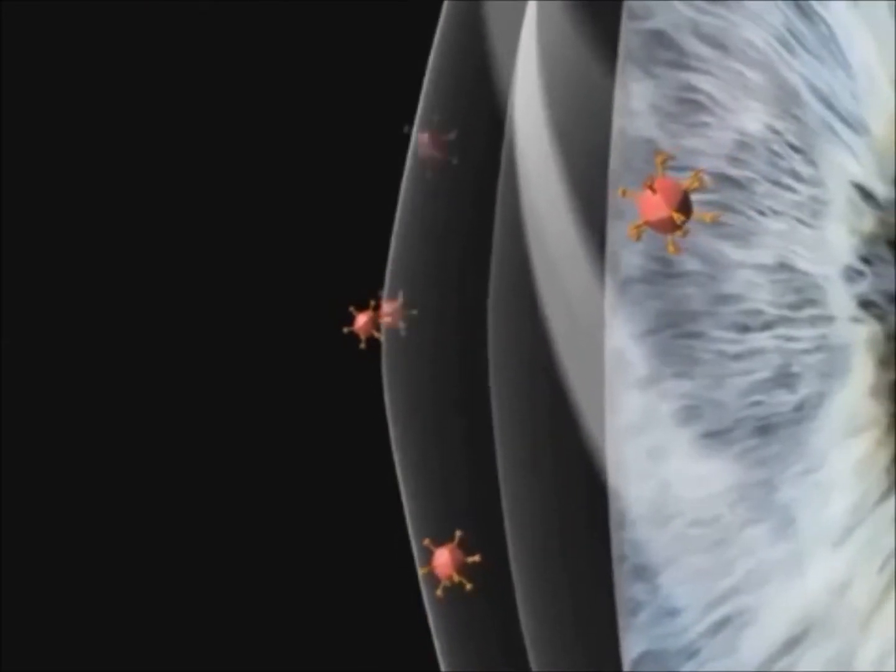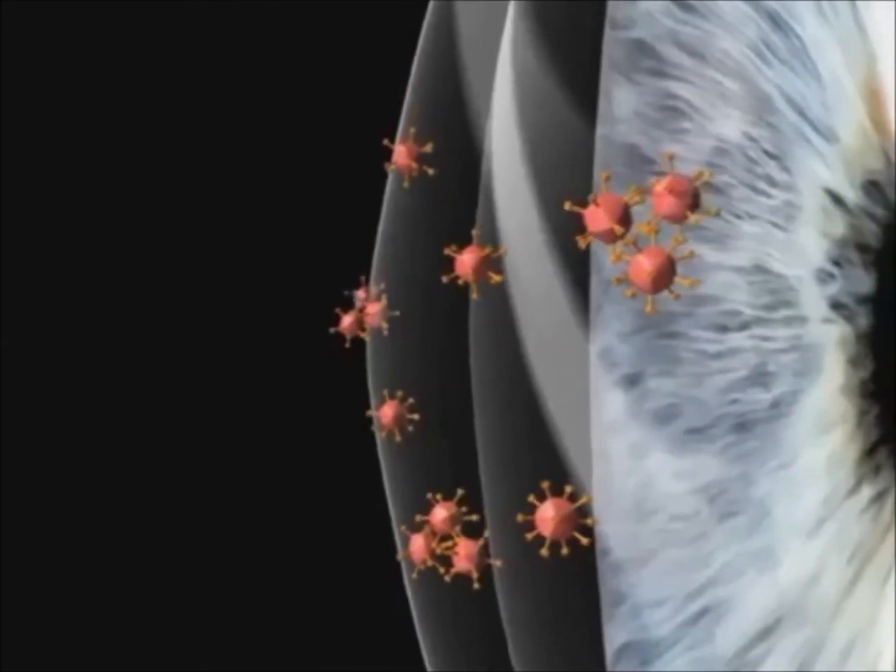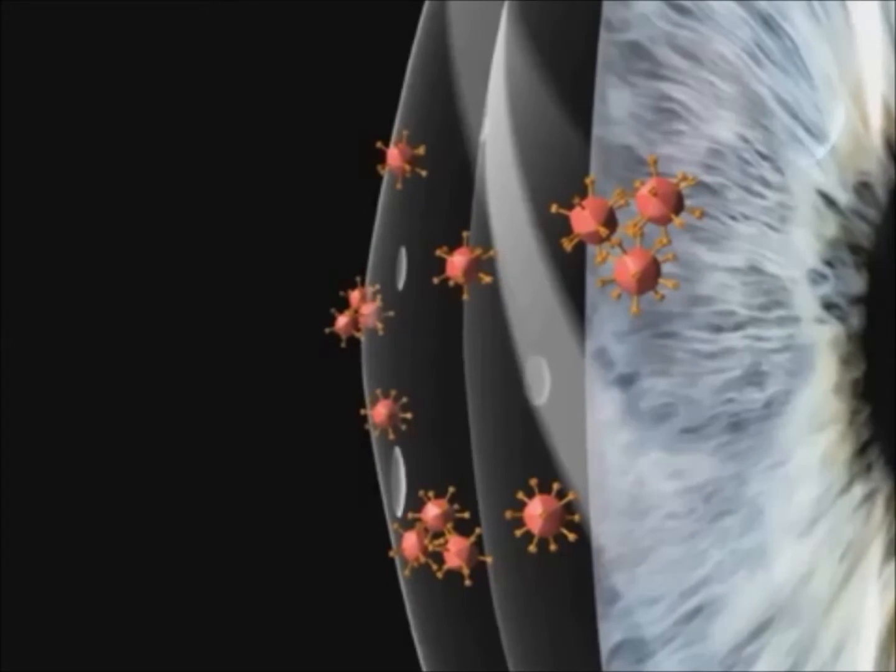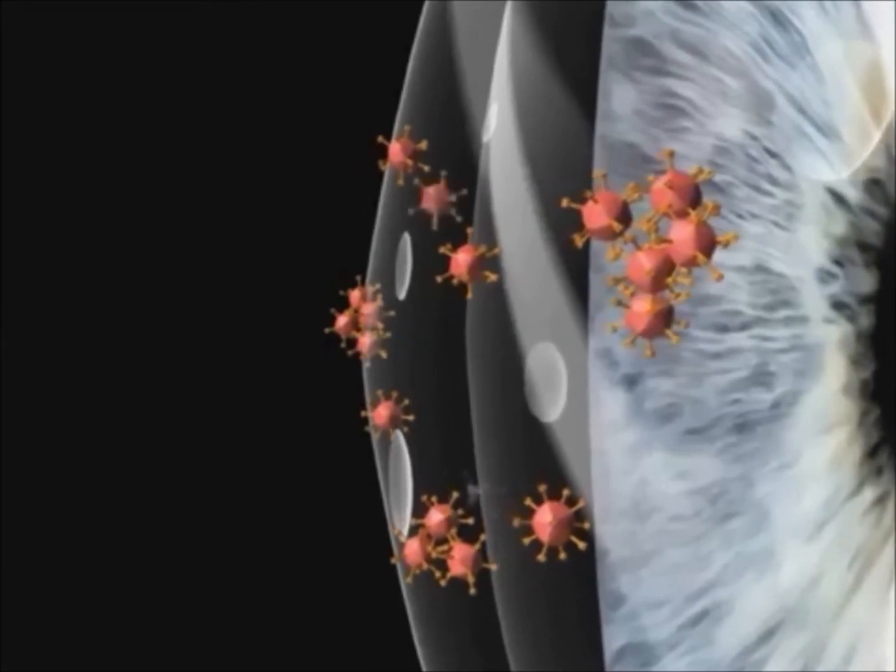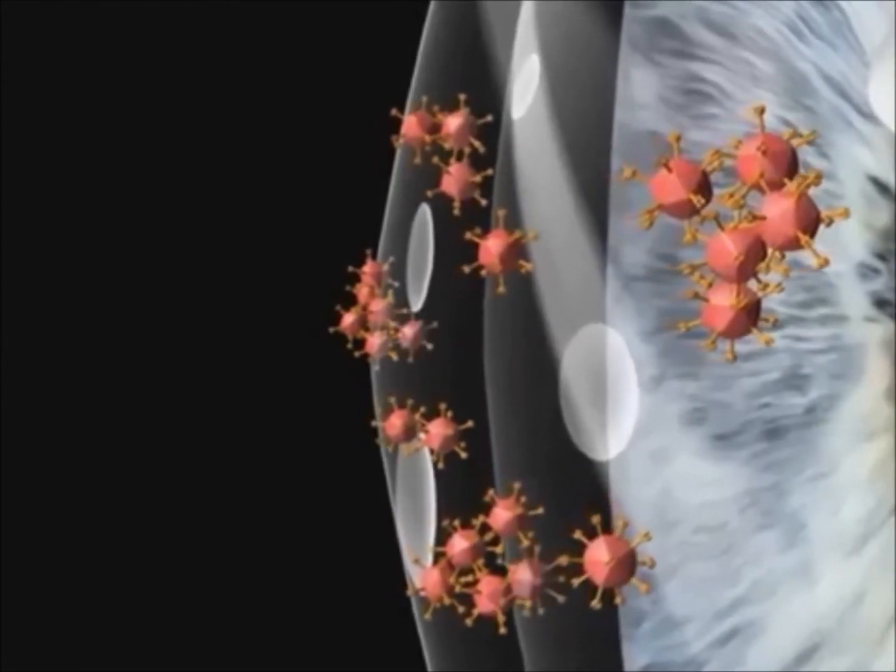Adenoviral conjunctivitis may cause symptoms that range from redness, tearing, and irritation of the eyes due to punctate keratitis, a condition in which irregularities on the surface of the cornea may cause blurred vision.